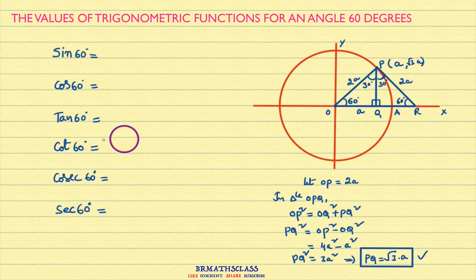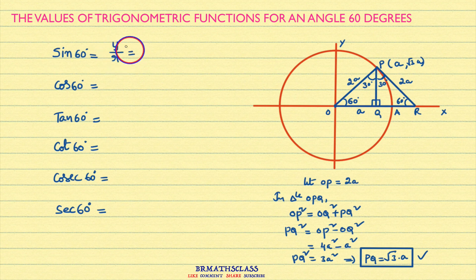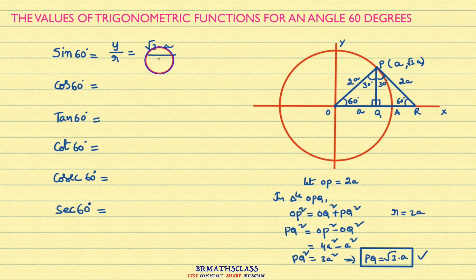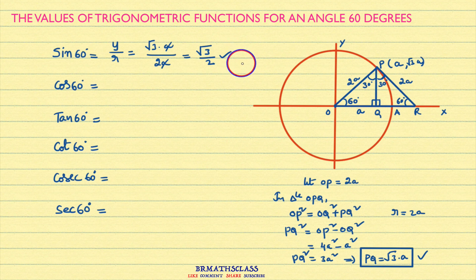Now we will find the value of sin 60 degrees. From the definition of trigonometric functions, sin θ is defined as Y divided by R, where Y is the Y coordinate of point P. The Y coordinate of point P is root 3 times A, divided by R. R is the radius of the circle, which is 2A. The A's cancel, and you get root 3 by 2. Therefore, sin 60 degrees equals root 3 by 2, and from now onwards we take it as a formula.